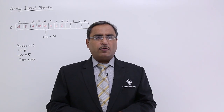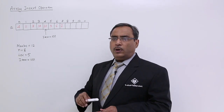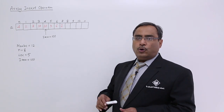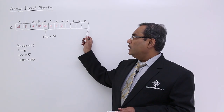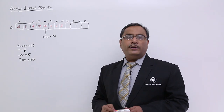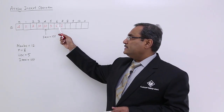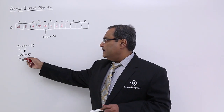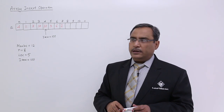It would be better to go through a demonstration or example. This is one array; the name of the array is 'a'. It has 12 locations, so from index 0 to 11 these are the index values and we are having 12 locations, so max_loc is equal to 12. Out of these 12 locations, 8 locations where the index ranges from 0 to 7 are having some data, so n is equal to 8 is the number of data existing in this array.